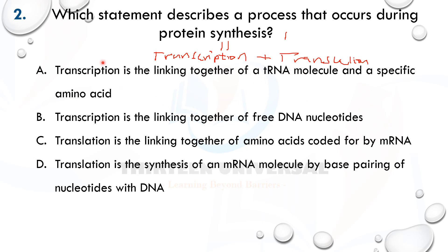Transcription is actually the linking together of RNA nucleotides to form a messenger RNA, so option A is eliminated. Option B says transcription is the linking together of free tRNA nucleotides — it should involve RNA nucleotides, not tRNA. The difference: DNA nucleotides contain deoxyribose sugar and thymine, while RNA nucleotides contain ribose sugar and uracil. So B is eliminated.